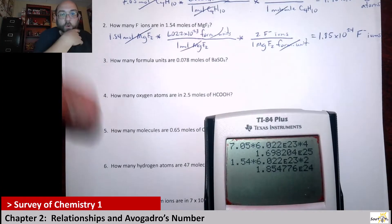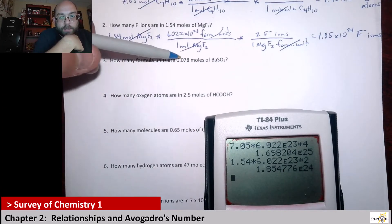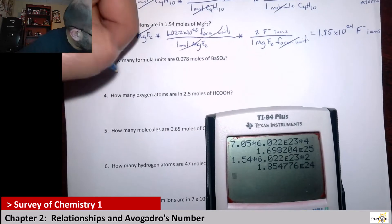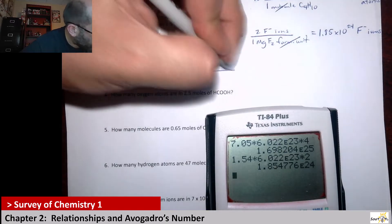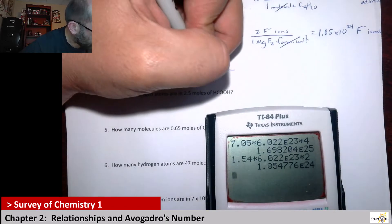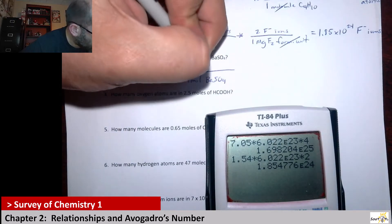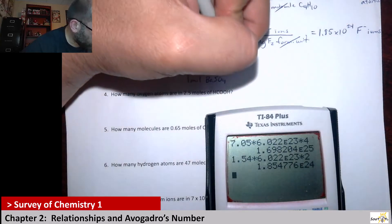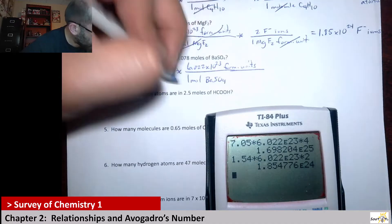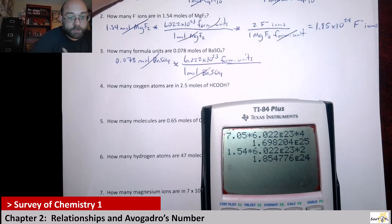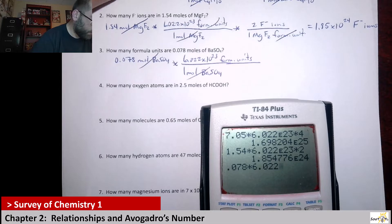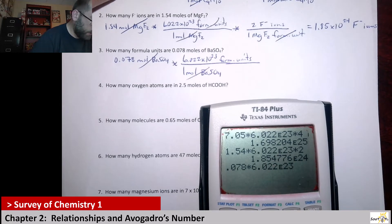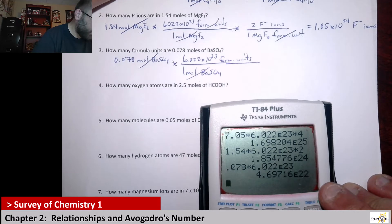Next up, it wants to know how many formula units of BaSO4 are in 0.078 moles. This one's not too bad. If I have 0.078 moles of BaSO4, one mole of anything would have that many formula units of BaSO4. So I'm going with Avogadro's number — 6.022 times 10 to the 23 formula units — that allows the mole to cancel. So I'm just saying 0.078 times 6.022 times 10 to the 23, which gives me 4.6971 times 10 to the 22.